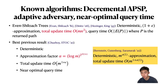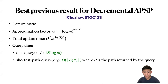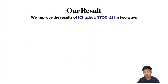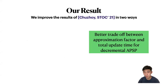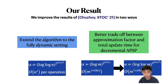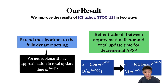We build on Chuzhoy's 2021 paper. Her algorithm is deterministic and achieves near optimal query time. However, the tradeoff between approximation factor and total update time is too far from optimal. We improve her results in two ways. First, for decremental APSP, we improve the approximation ratio to log(log(m))^{2^{O(1/epsilon)}}, giving sub-logarithmic approximation with near optimal total update time. Second, we extend the algorithm to a fully dynamic setting achieving a similar tradeoff. Again, we can set epsilon to get sub-logarithmic approximation and total update time O(m^{1+o(1)}).